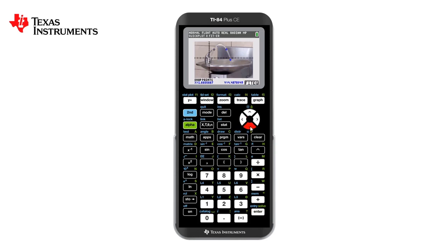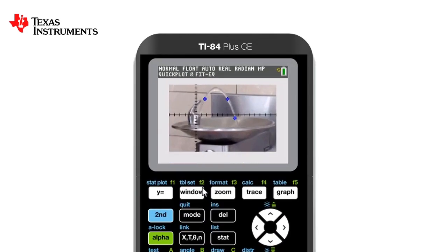You'll notice above F5, it says fit equation. We therefore simply need to press the graph button, and we have a choice of regression equations that will match those points. Obviously, our water spout is a quadratic, so we'll press number three. And there is a beautiful graph matching the water spout.